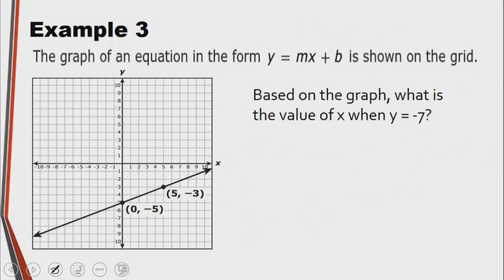Example 3: The graph of an equation in the form of y equals mx plus b. Instead of using the function notation f(x) equals mx plus b, they just use y. They are the same thing, basically. Based on the graph, what is the value of x when y equals negative 7? We are supposed to find the input when the output is negative 7.